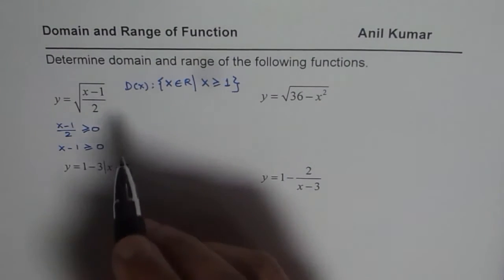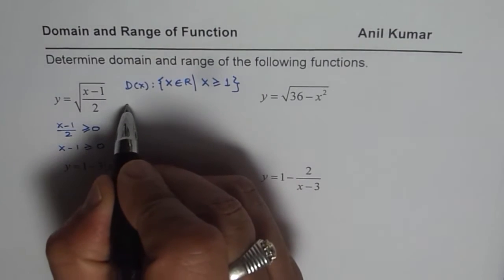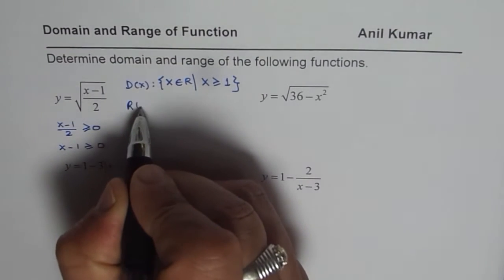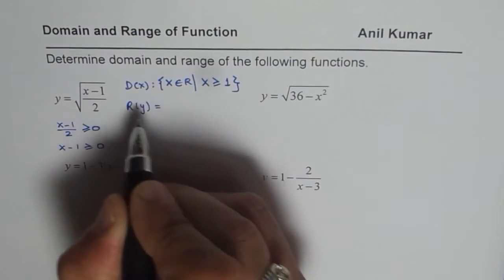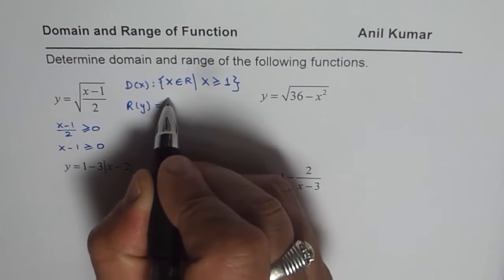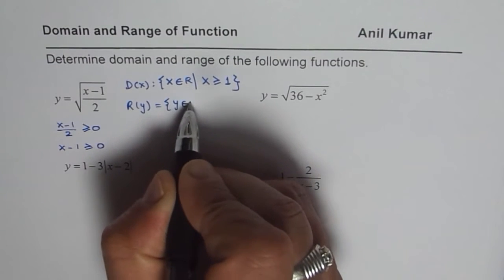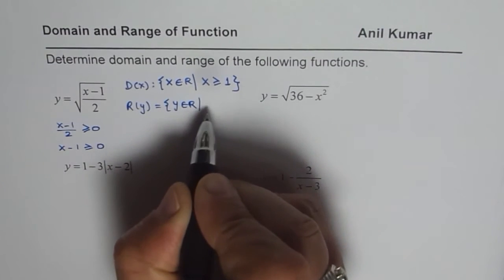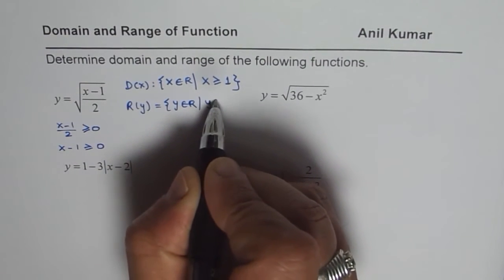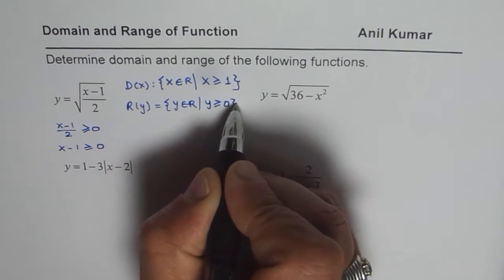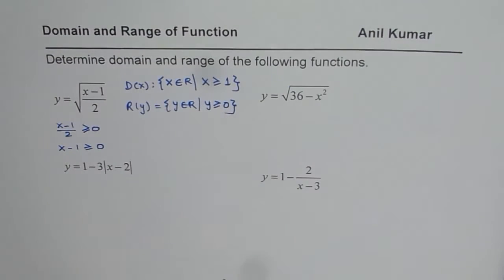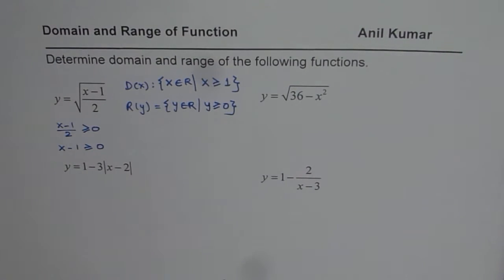As far as the range is concerned, we know square root functions are always non-negative. So y belongs to real numbers where y is greater than or equal to 0. That is how we write the domain and range of the first function.